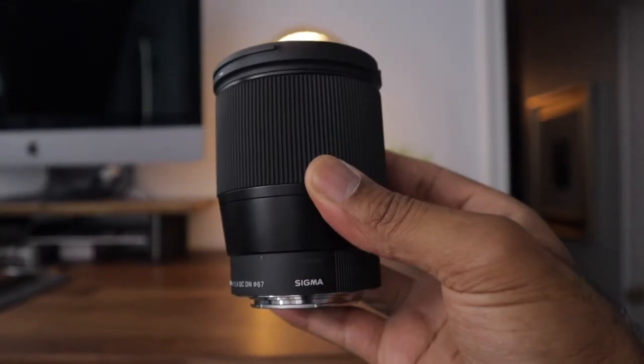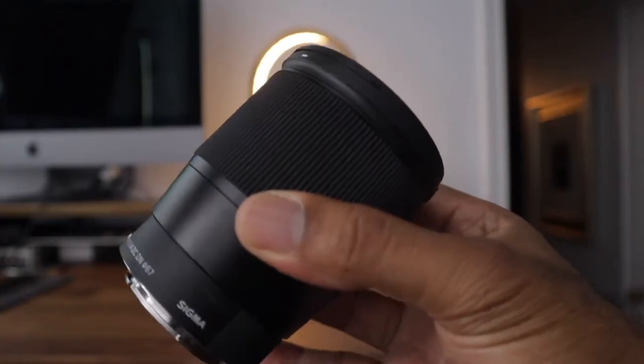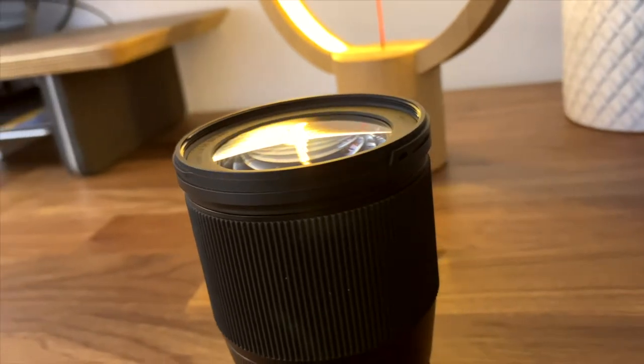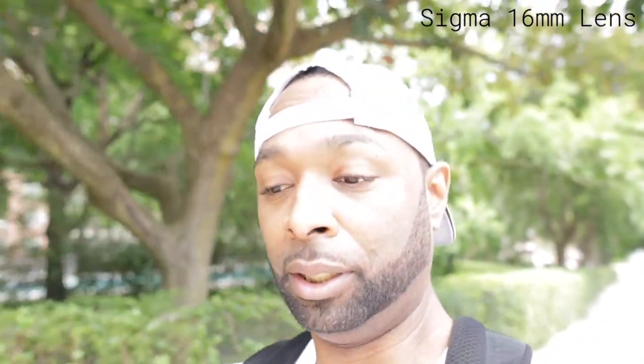Now let's switch to the Sigma 16 millimeter lens. What you'll notice is that it's the most beautiful and well-built lens — the quality is spectacular and it's probably my favorite Canon lens. For pros: it has an aperture of f/1.4 which is the best of all three, the best picture quality, best build quality, and also has manual focus as an option.